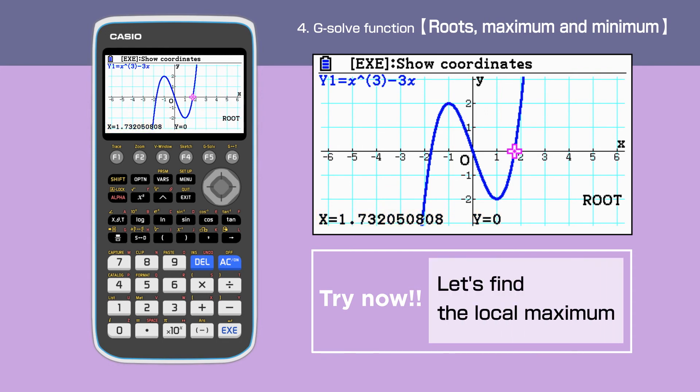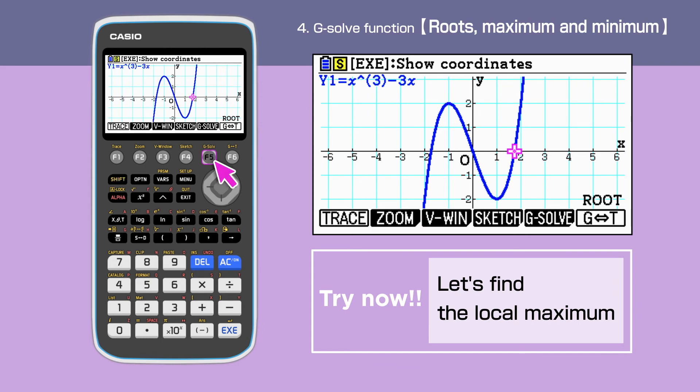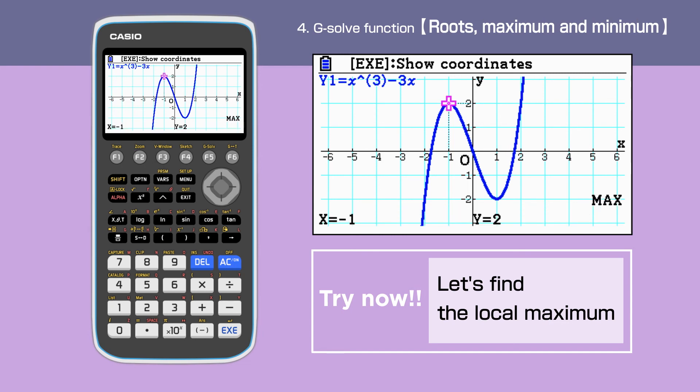Next, we can find the local maximum of the graph. Press SHIFT to go to G-solve, then enter F2 to select maximum. The cursor is at the local maximum, and the coordinate of this point is minus 1, 2.